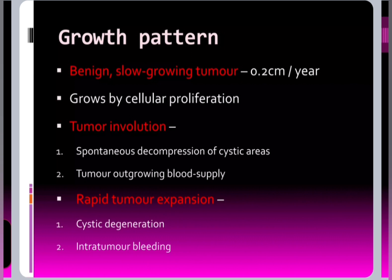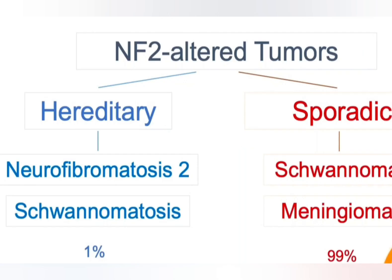It is a very slow-growing tumour, growing maybe one millimetre per year. Sometimes it can undergo involution on its own when it outgrows the blood supply. However, growth can rapidly increase if there is cystic degeneration or intratumoural bleeding. These tumours can occur either in a sporadic form or a hereditary form; sporadic are much more common, constitute the majority, and are usually unilateral.